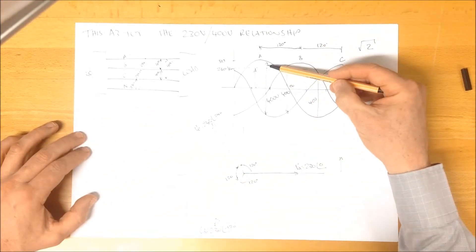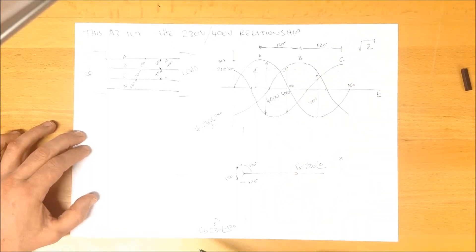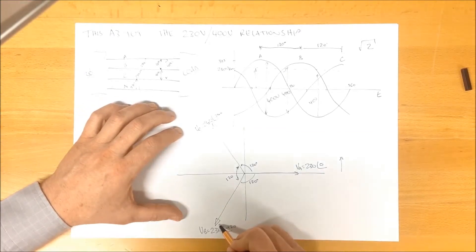Up here we measured between a couple of these phases and we got 400 volts. We can do the exact same thing down here. We can measure between A and B, and here it is here.